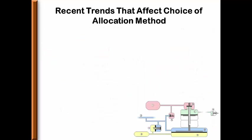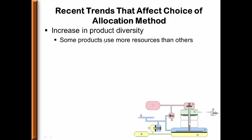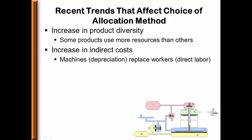Recent trends affecting the choice of allocation method include an increase in product diversity. As products become more diverse, some use more resources than others, so costs must be allocated accurately to the objects that consume those resources. There is also an increase in indirect cost, as companies have been replacing workers — who create direct labor, a variable cost — with machines that create a fixed cost. Direct labor can be identified with specific products, but depreciation is an indirect cost and cannot, so more costs are being classified as indirect and must be allocated.